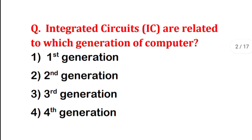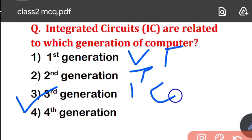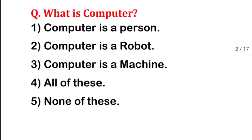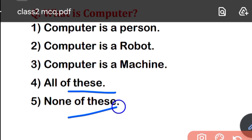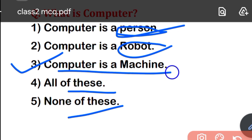Next question: integrated circuits are related to which generation of computer? Integrated circuits are related to our third generation. In the first generation we used vacuum tubes, in the second generation we used transistors, and in the third generation we used integrated circuits.